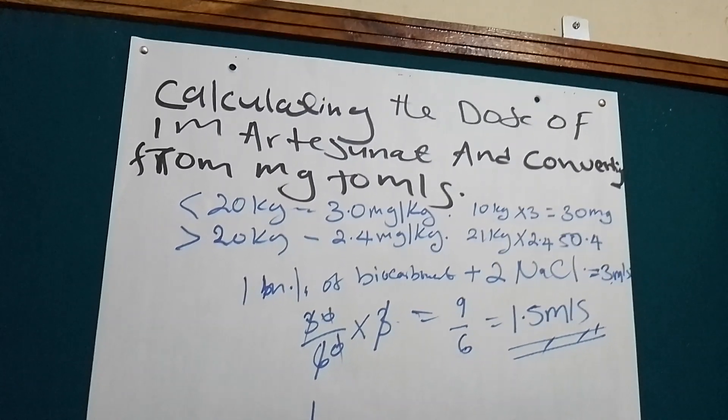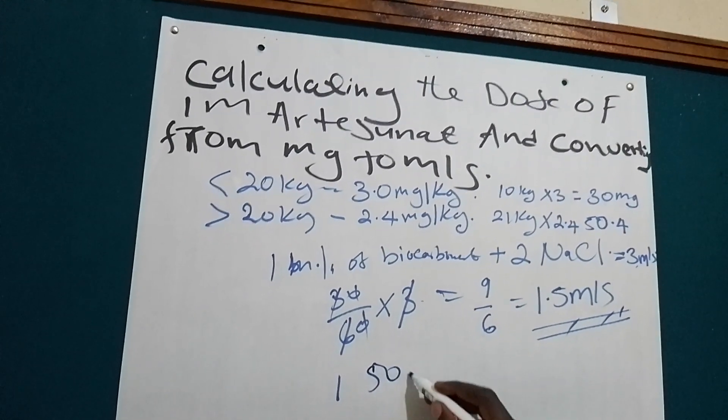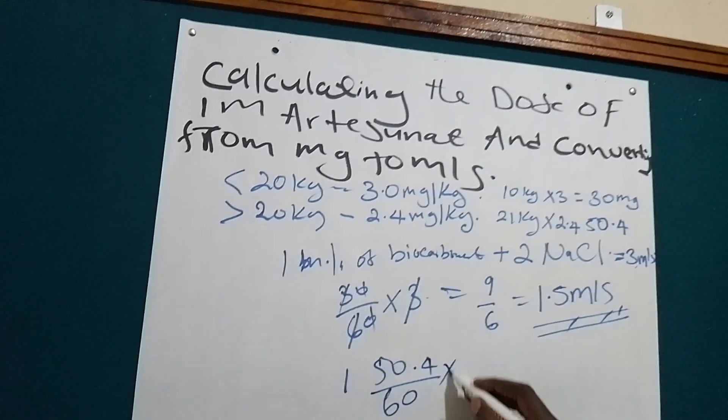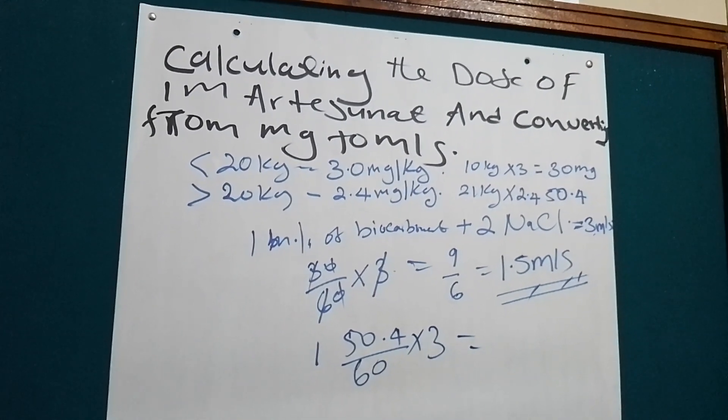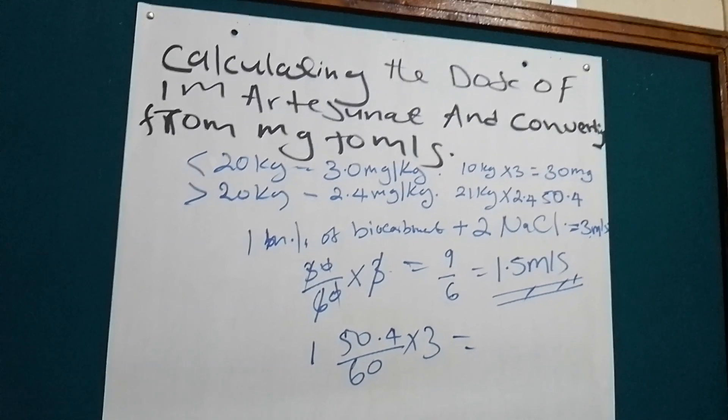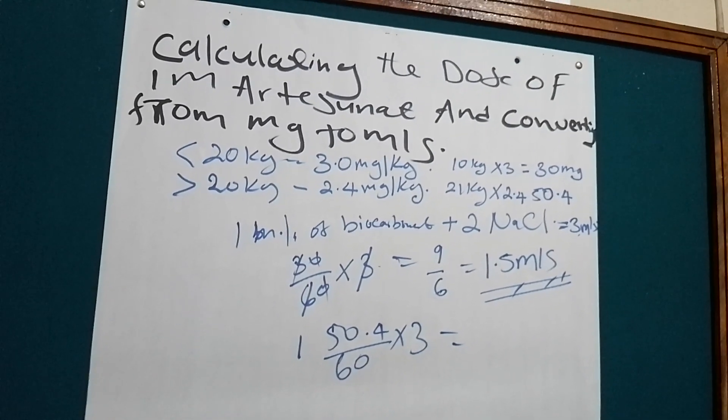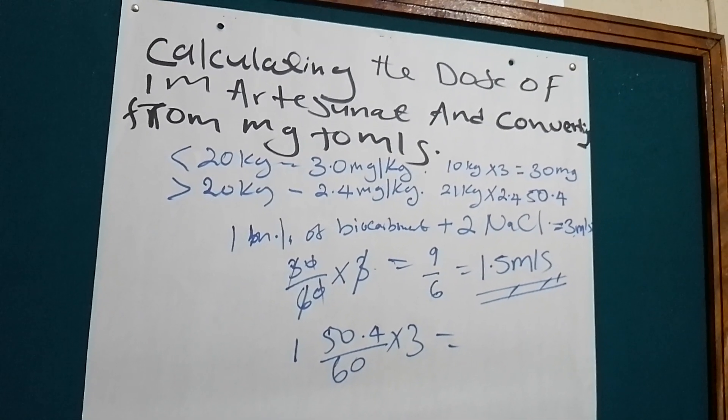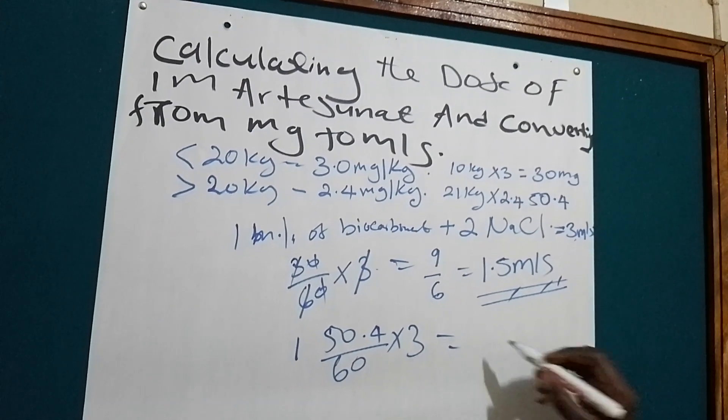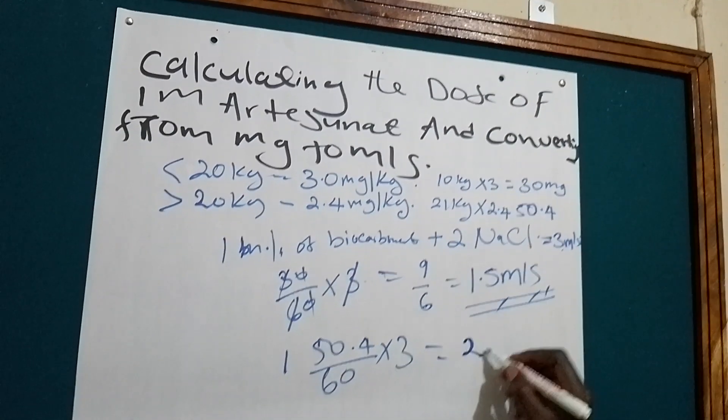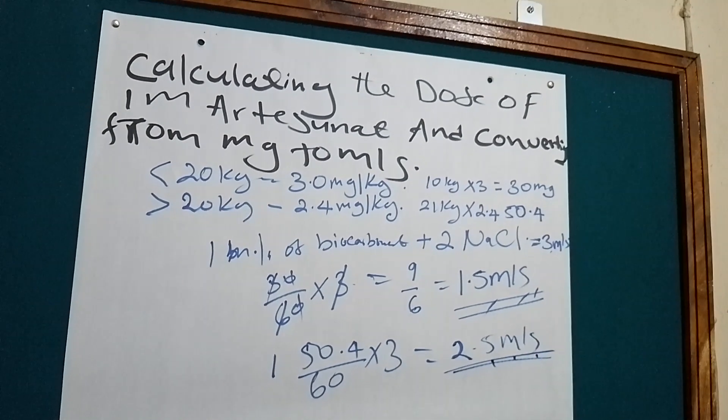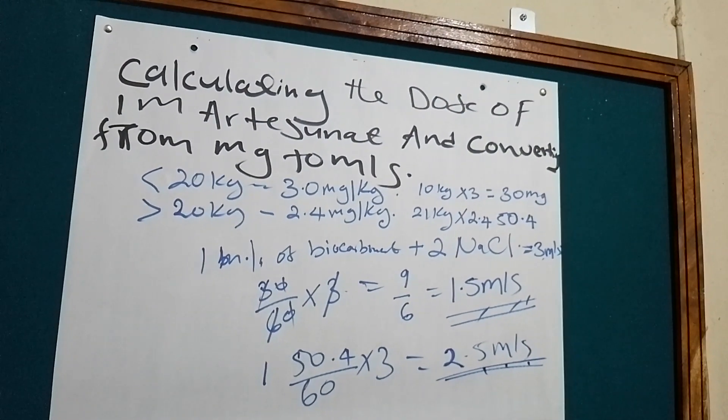So how about the second one? The second one is 50.4 divided by 60 times 3. So we are going to aspirate 2.5 milliliters for this baby. So this is the first method.